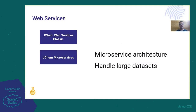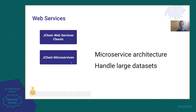Let's focus on the web services now. At the beginning we had the Jcam Web Services Classic, which is a monolithic web service. We created a microservice-based architecture, and that is the new Jcam microservices, which is also using the latest generation search technology. I will focus first on the microservice architecture, and later on I will also mention how the new feature of the backend engine can handle large datasets and what we measured last year.